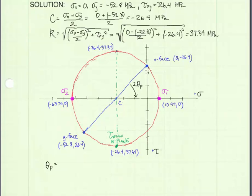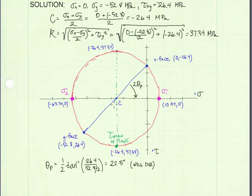Now, the angle we must rotate the element to move the x-face down to the nearest principal stress — sigma 1 — is theta p. On Mohr's circle, angles are always double the actual angles, so 2 theta p is shown on the circle. We can calculate theta p as one half times the arctangent of the opposite side, 26.4 — the height of this right triangle — divided by the base dimension. The base dimension is 26.4 (which is 52.8 divided by 2), giving us 22.5 degrees, going in the clockwise direction, so it is the negative direction.